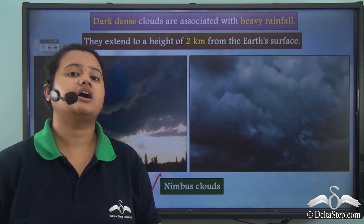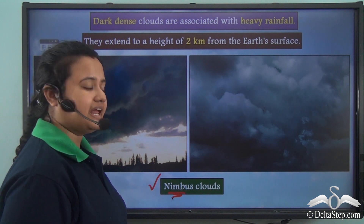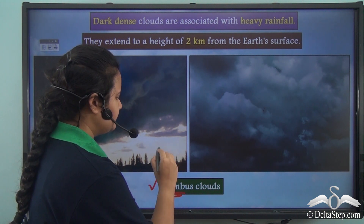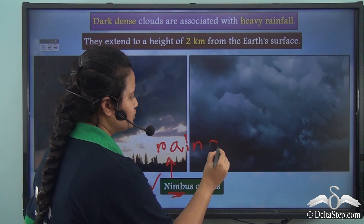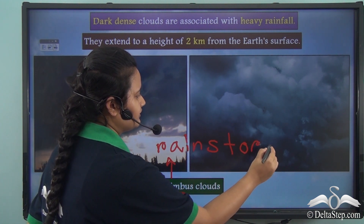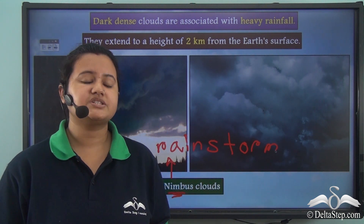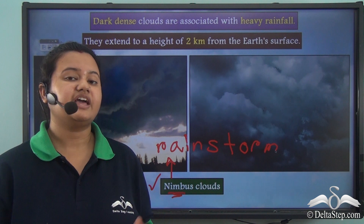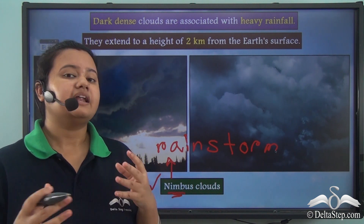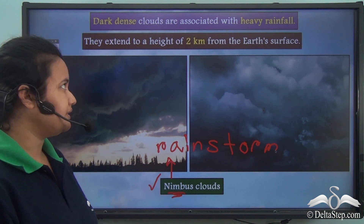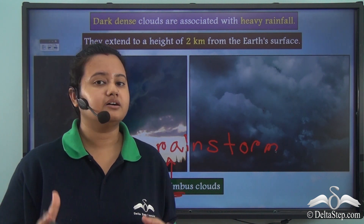These clouds are called so because Nimbus in Latin means rain or storm. And hence, these dark dense clouds that are associated with heavy rainfall are called Nimbus clouds. Nimbus clouds are located very close to the earth's surface.